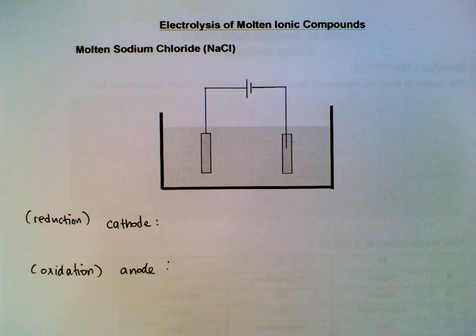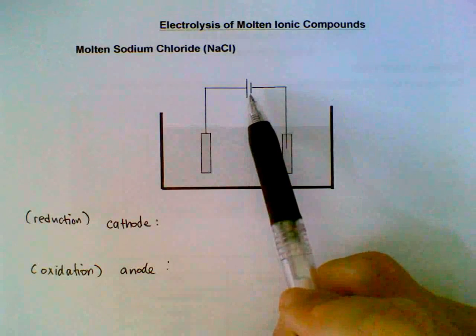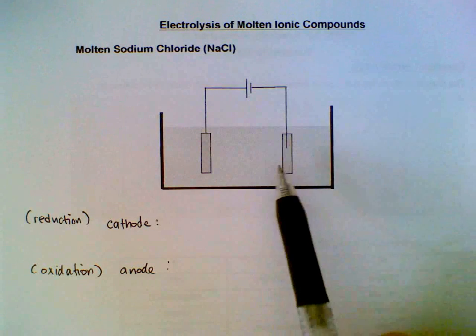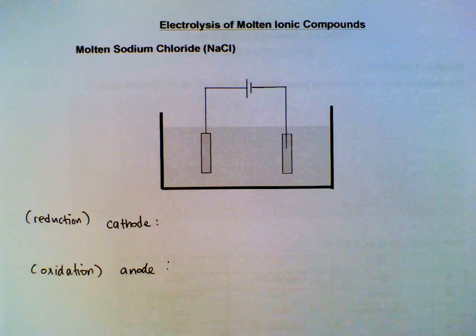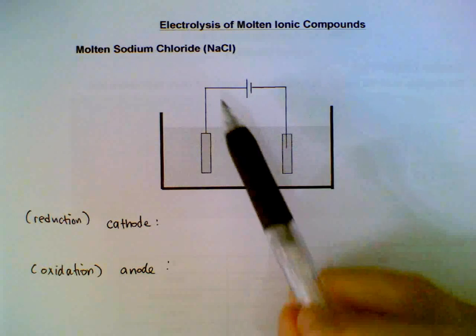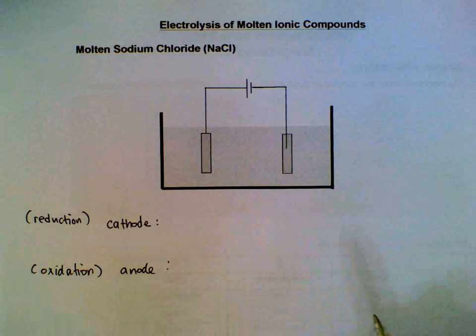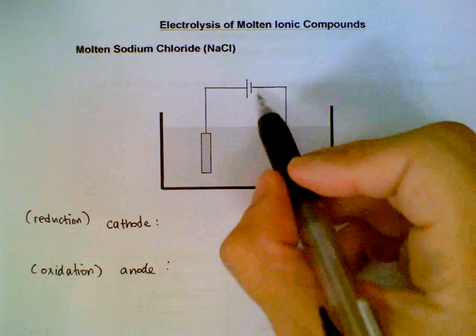In an earlier video we discussed how to assign the positive and negative terminals for the battery and also the positive and negative electrodes for the electrolytic cell. We will apply these concepts to two examples in this video: molten sodium chloride and molten lead bromide.